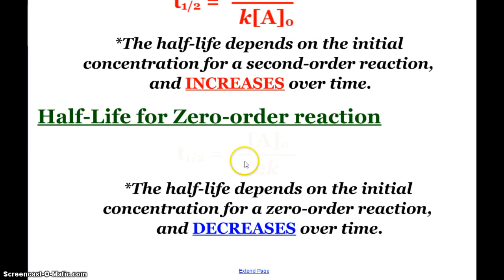Whereas for a zero-order reaction, my half-life equation is the initial concentration divided by 2k, and again the initial concentration is involved, but this time our half-life decreases over time. So if my first half-life takes 10 minutes, the second half-life could take 2 minutes, and so on.